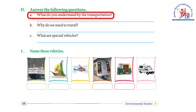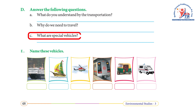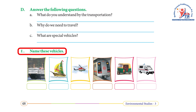Exercise D — Answer the following: (a) What do you understand by transportation? Answer: The movement of people and goods from one place to another is called transportation. (b) Why do we need to travel? Answer: In search of jobs, educational and medical facilities, meeting family and friends, going for trips and vacations. (c) What are special vehicles? Answer: Ambulances, fire engines, and police vans are some special means of transport. (e) Name these vehicles — Answer: Do it yourself.